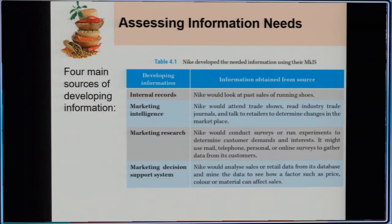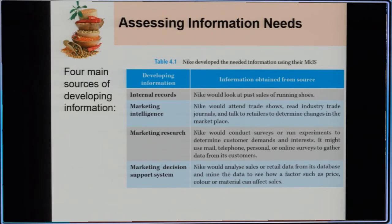There are four main sources of developing information. They are internal records, marketing intelligence, marketing research, and marketing decision support systems. For internal records, Nike would look at past sales of running shoes and record that information derived from their sales reports. For marketing intelligence, Nike would attend trade shows, read industry trade publications, and talk to retailers to determine changes in the marketplace.